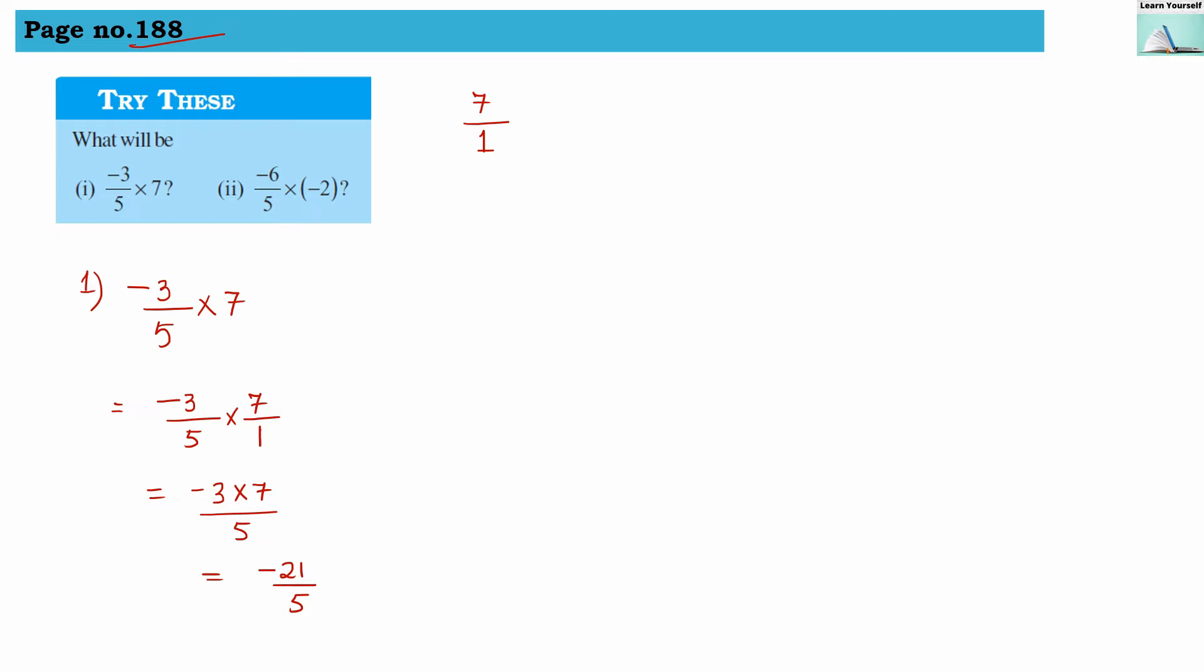Second numerical is -6/5 in multiplication with -2. So -6 × -2 ÷ 5. We cannot reduce anything here, so let us multiply. We will get 12. Minus times minus will be plus, so our answer will be +12, which is 12/5.